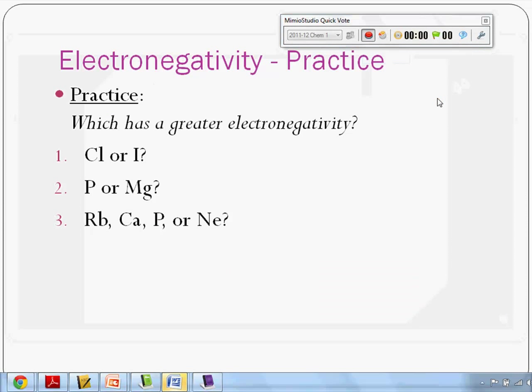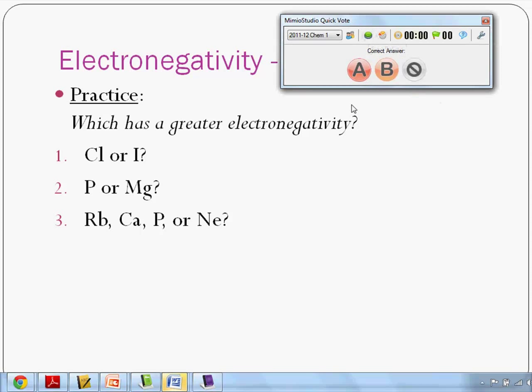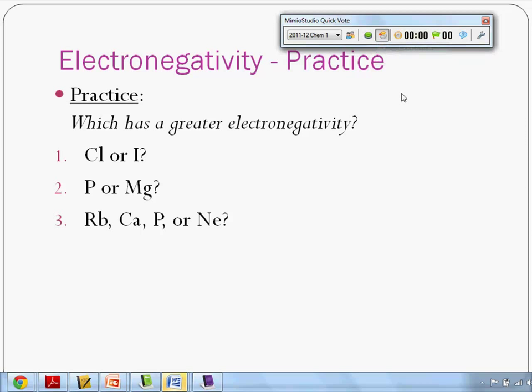Phosphorus or magnesium. Which one has greater electronegativity based on your trends? Three, two, one. Phosphorus is closer to fluorine, right? So phosphorus would have the higher electronegativity. Almost. Got the hundal. Just missed it.